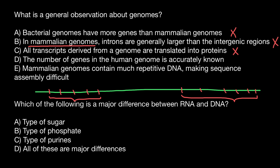The next statement: the number of genes in the human genome is accurately known. We also don't know the exact number of genes — we can only say that there are roughly about 23,000 to 24,000 genes in our genome. So this is also incorrect.